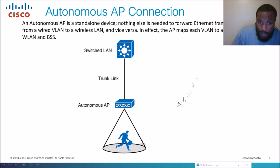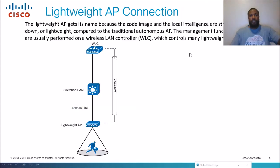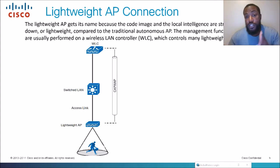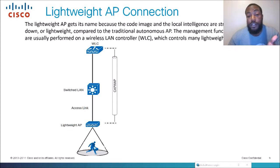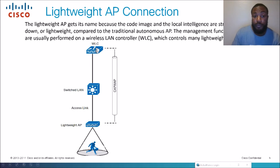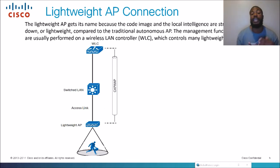But let's say you've got a whole bunch of autonomous APs. Before we move on to that, let's talk about lightweight mode. A lightweight AP gets its name because the code image and local intelligence are stripped down — it's a lighter version of an autonomous AP. Compared to the traditional autonomous AP, the management functions are usually performed on a Wireless LAN Controller, or WLC, which controls many lightweight APs.